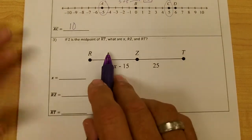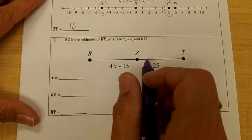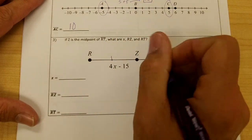Number three, if z is the midpoint of RT, that means that this segment is cut in half.